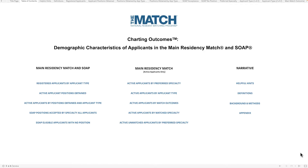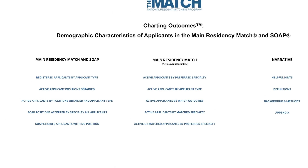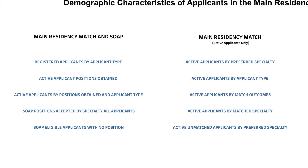The visuals are listed under the other two sections of the Table of Contents based on what part of the match process the information is relevant to. For visuals that include information for all registrants — those who certified a rank order list and participated in the Main Residency Match, and/or those who participated in SOAP, the Supplemental Offer and Acceptance Program — you can refer to the Main Residency Match and SOAP section. For visuals focused solely on active applicants, those who certified a rank order list and participated in the Main Residency Match, you can refer to the Main Residency Match Active Applicants Only section.